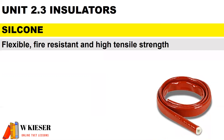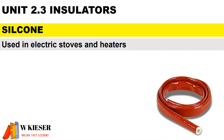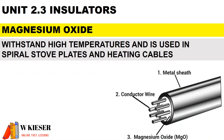Silicone is flexible, fire resistant, and has high tensile strength. It is used in electric stoves and heaters. Magnesium oxide can withstand high temperatures and is used in spiral stove plates and heating cables.